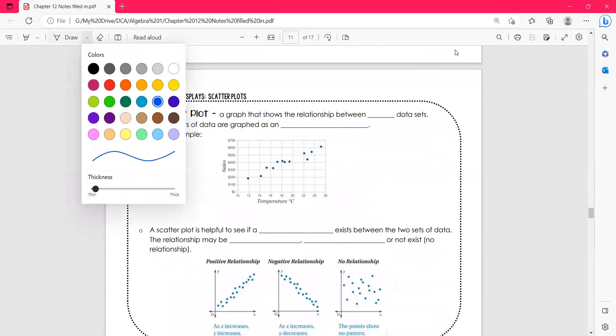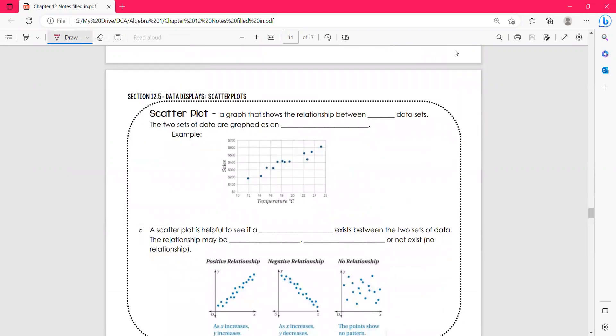And so here's one more way that we can display data and it is called a scatter plot. And these actually can tell us a lot of information about the data. A graph that shows the relationship between two data sets. So we're comparing two different things. The two sets of data are graphed as an ordered pair.